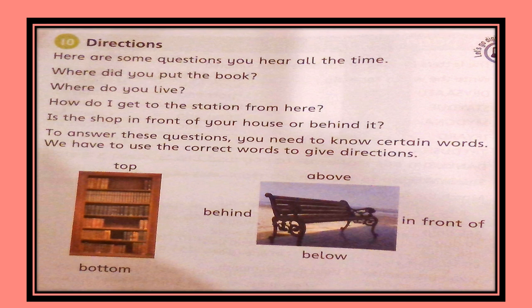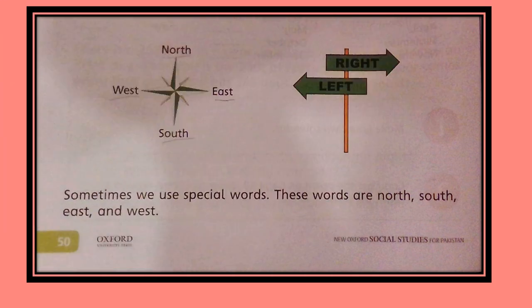Here we have two pictures. In the first picture we can see a bookshelf, and in the other picture we can see a bench. Different directions have been marked, like top, bottom, behind, above, below, and in front of. Moving forward, here we have the cardinal directions — North, South, East, and West — labeled, and on the other hand we can see two arrows pointing right and left. Sometimes we use special words: these words are North, South, East, and West.